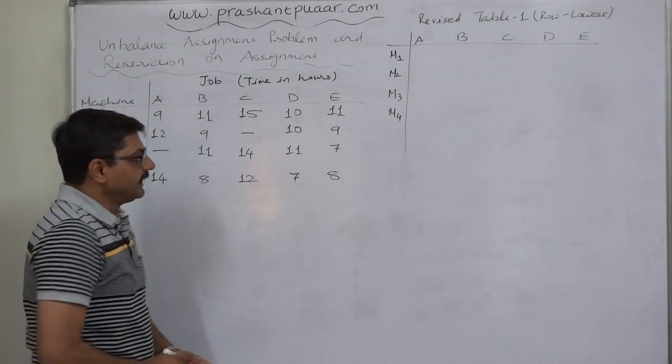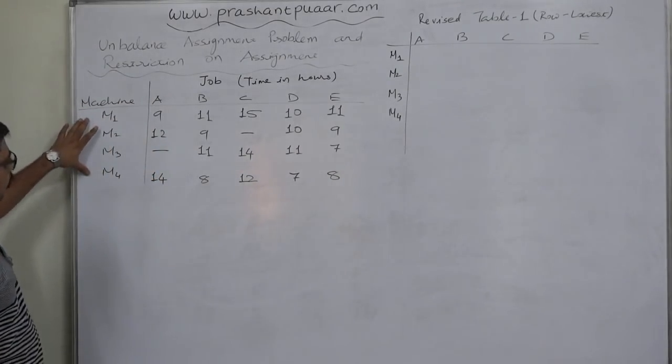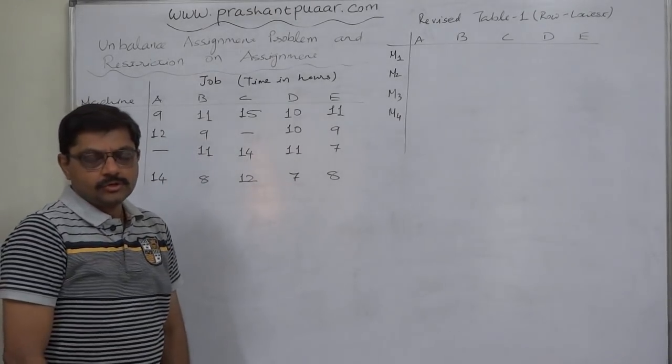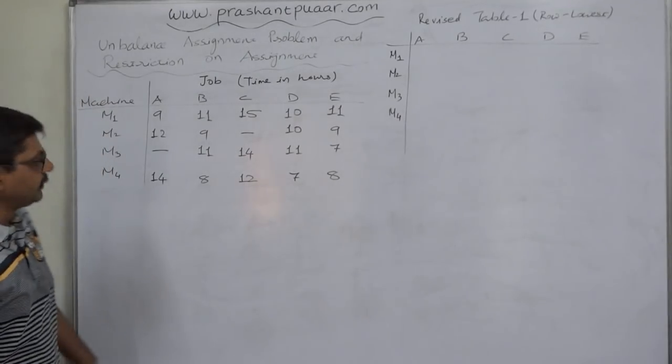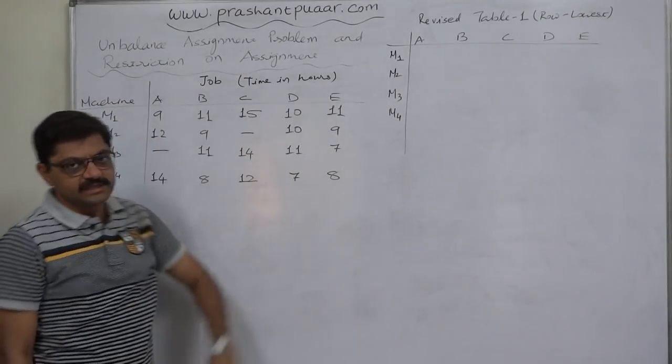And as we know that we can solve only a balanced assignment problem. But in this case, we have four machines and five jobs. So we can say that this one is not a balanced assignment problem. So it is known as unbalanced assignment problem.